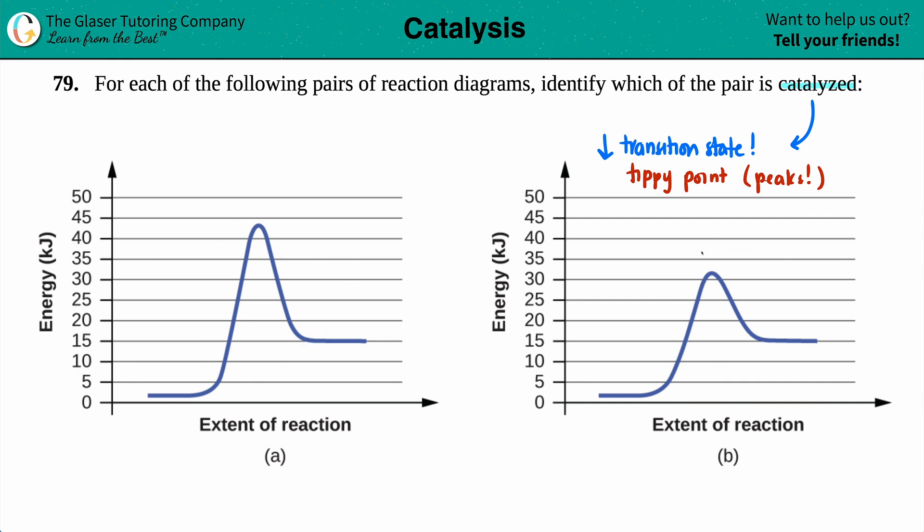In this case, for each one of these I only see one peak or one tippy point. The tippy point is the highest peak. So I see one right here, and if we extrapolate back to the y-axis - fancy word there, it just means go back to the y-axis - maybe we're at, I don't know, 43 kilojoules for that transition state. The transition state is always the highest peak.